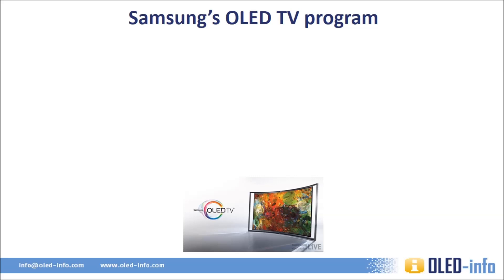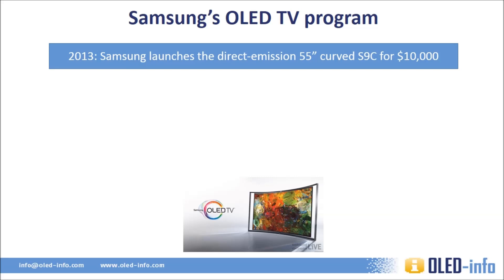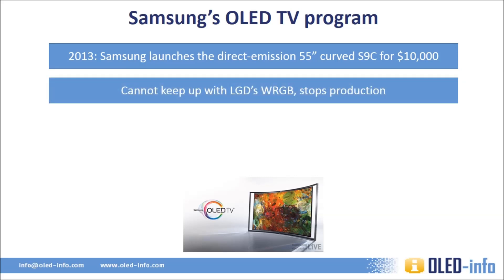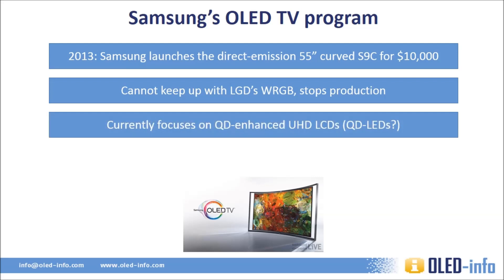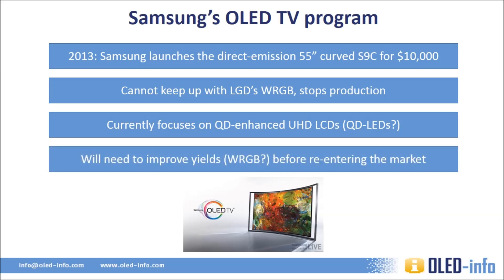Just like LG, in 2013 Samsung launched their first OLED TV. The S9C was a 55-inch Full HD curved direct-emission OLED TV that launched for $10,000. The price was later reduced, but Samsung could not keep up with LG Display's WRGB production process, and Samsung decided to leave the OLED TV market. Samsung is currently focused on high-end LED-backlit LCD panels that use quantum dot color enhancement films. Samsung is still developing OLED TVs, but the company needs to drastically improve yields and scalability before it re-enters the market. Samsung officials stated several times that cheap OLED TVs are not expected before 2017 or so. Some speculate that Samsung will adopt LG's WRGB technology, but it's more likely that the Korean giant will attempt to improve its direct-emission production until it reaches high enough yields.